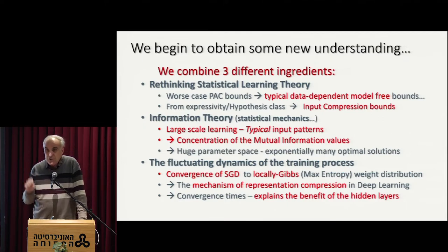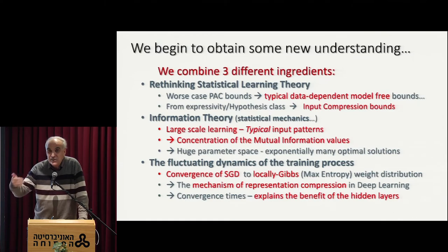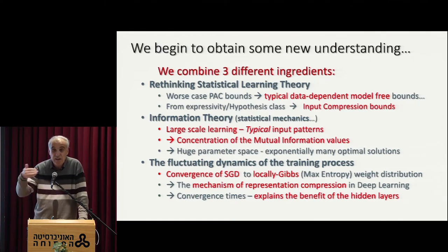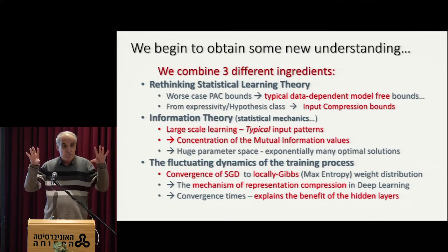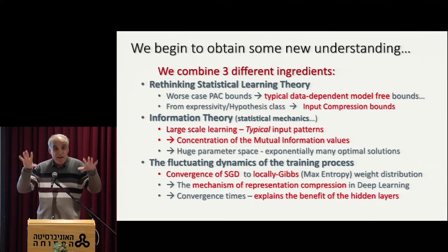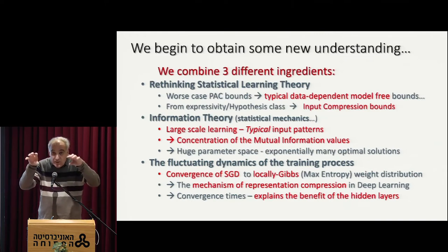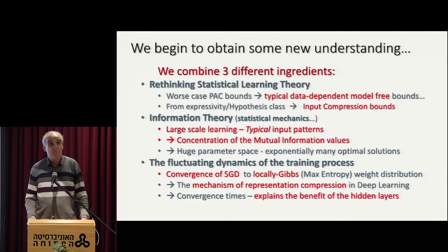Information theory alone cannot tell you the real story. It turns out that the real story is dynamics. Something in this gradient descent algorithm — the fact that we actually train those networks by very stupid stochastic gradient descent methods, just minimizing the error on the training data with small adjustments in the parameters — is key.